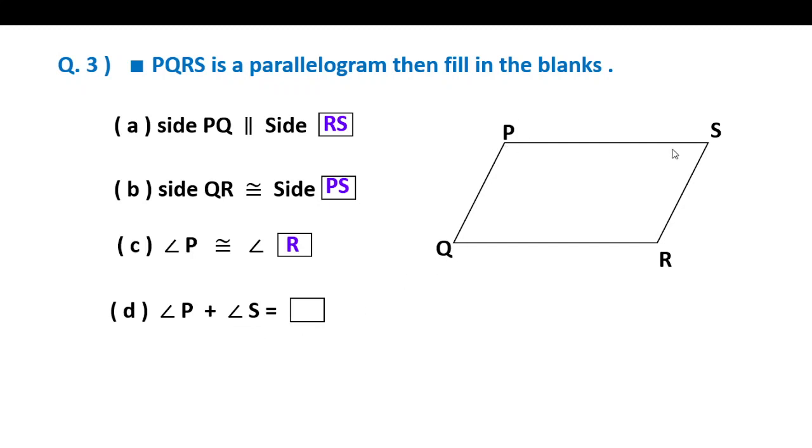Fourth: Angle P plus angle S is equal to? Angle P and angle S are which type of angles? They are interior angles. In this parallelogram, these sides are parallel, this is the transversal. Then P and S are interior angles. Interior angles are supplementary. Therefore angle P plus angle S is equal to 180 degrees, supplementary.